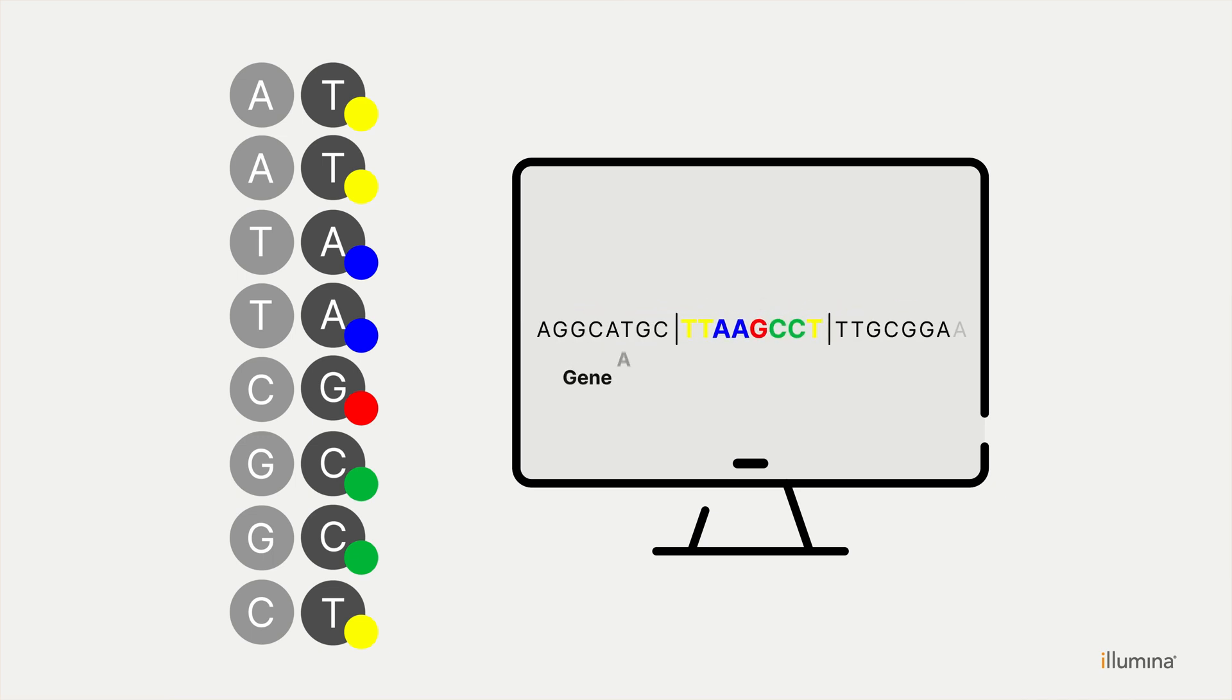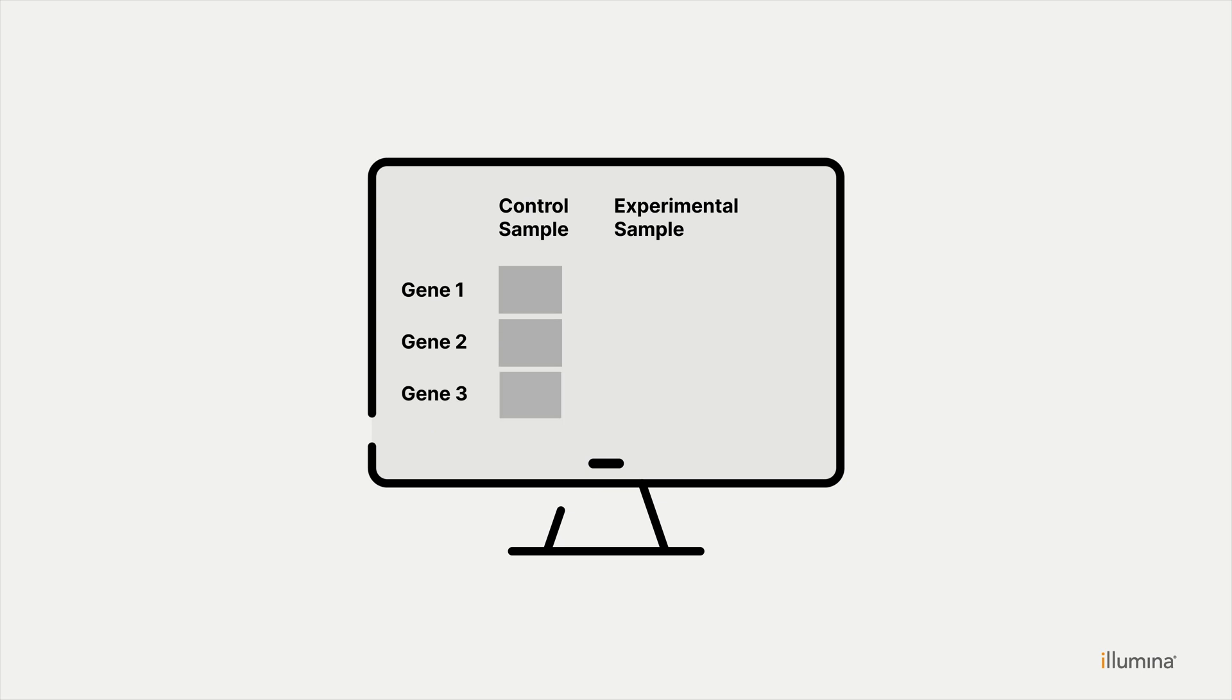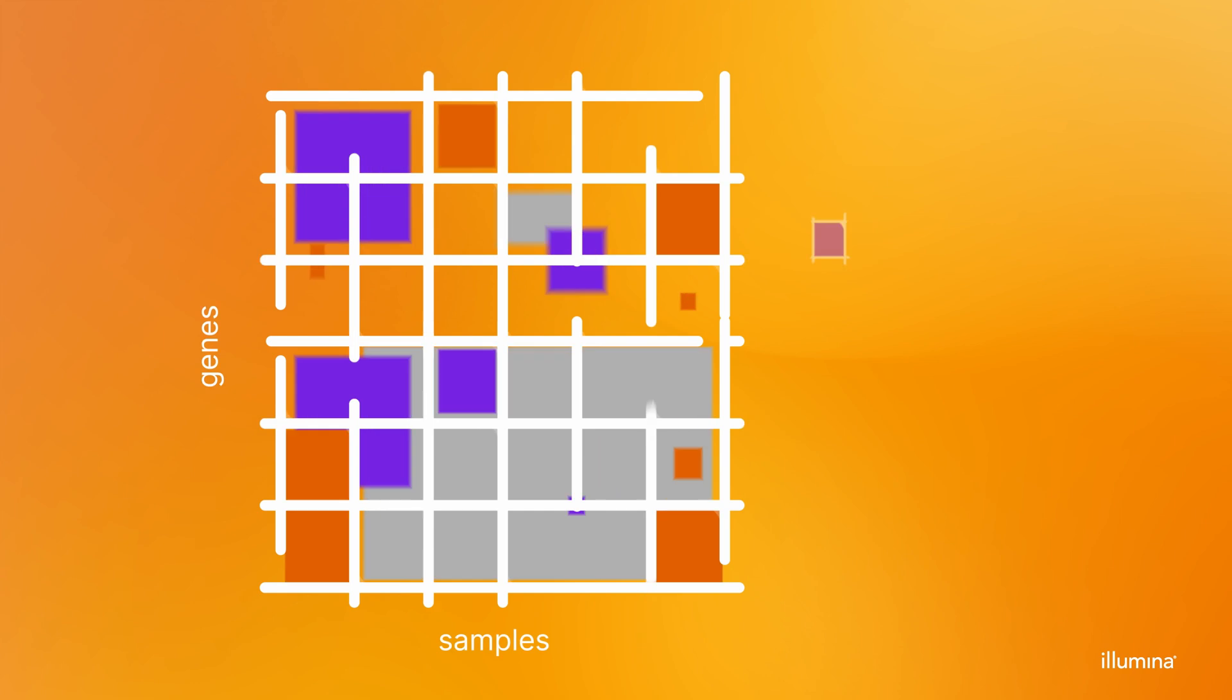After sequencing, bioinformatic analysis identifies and quantifies the transcripts in your sample. The resulting data come together to form a holistic view of gene expression profiles indicating which genes are upregulated, downregulated, or unchanged compared to controls.